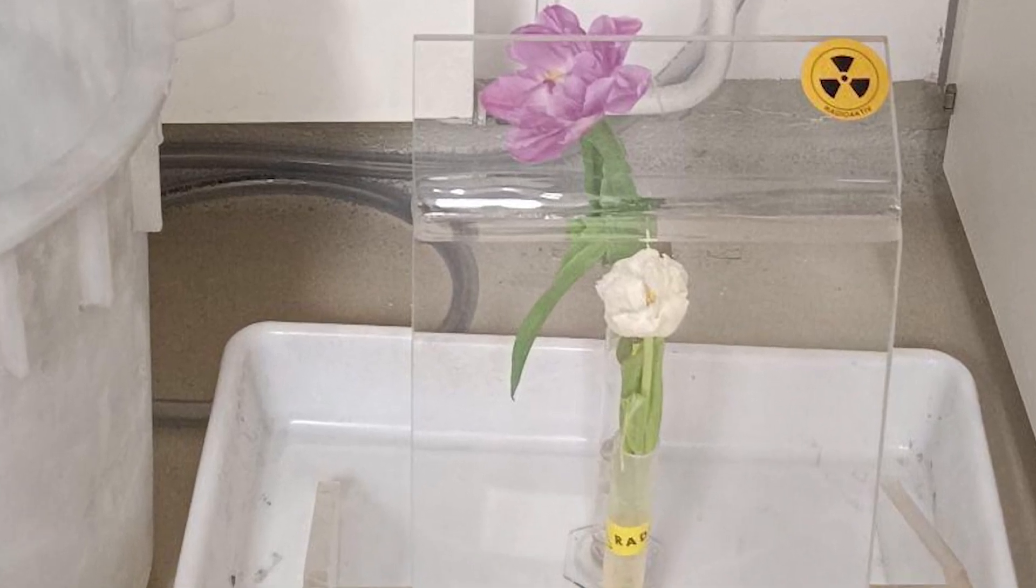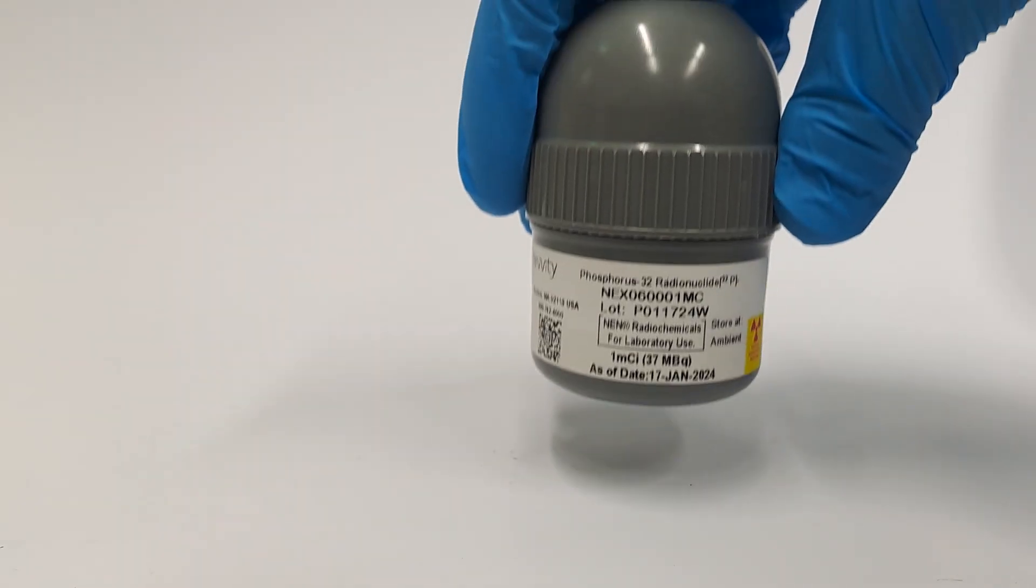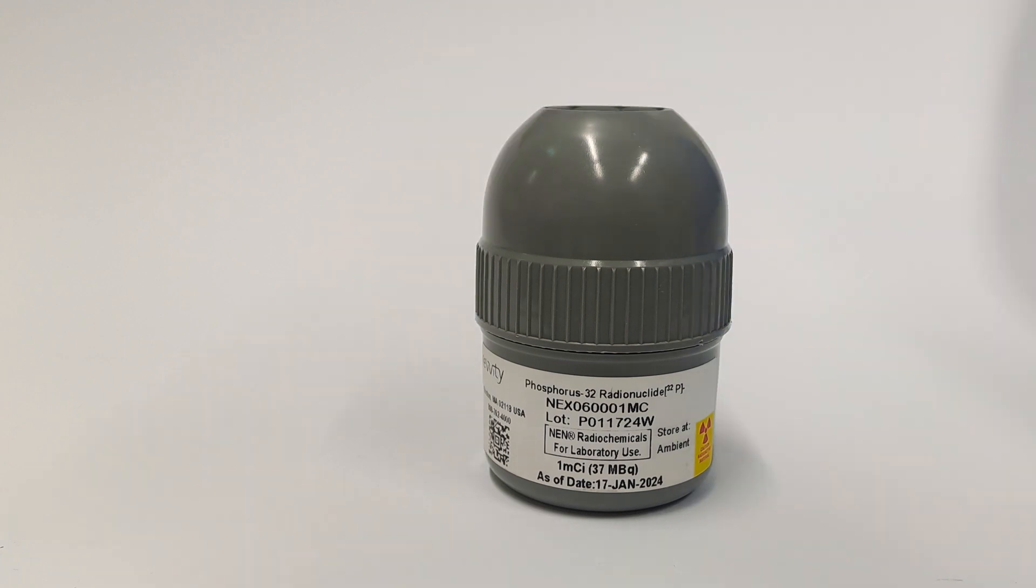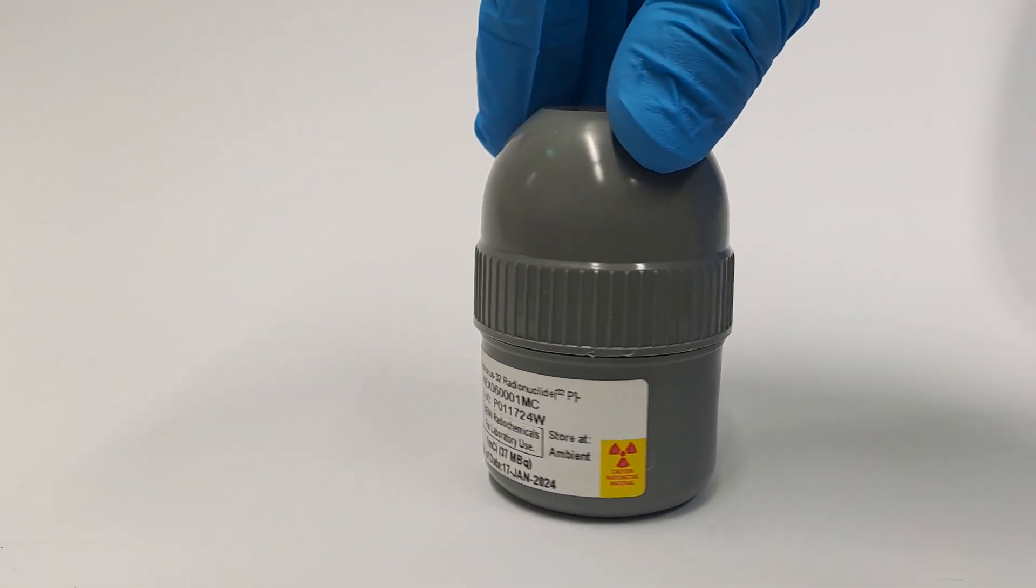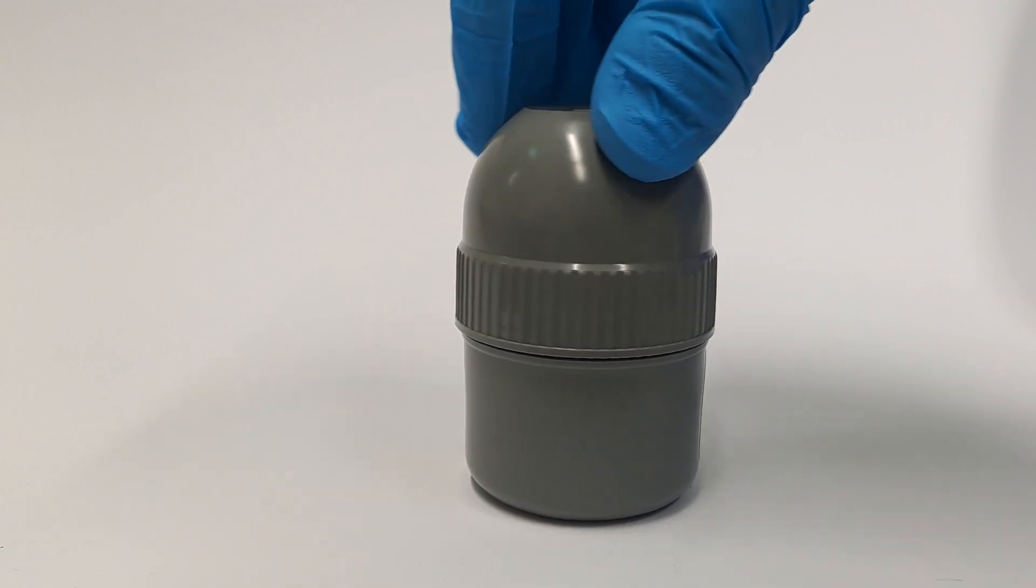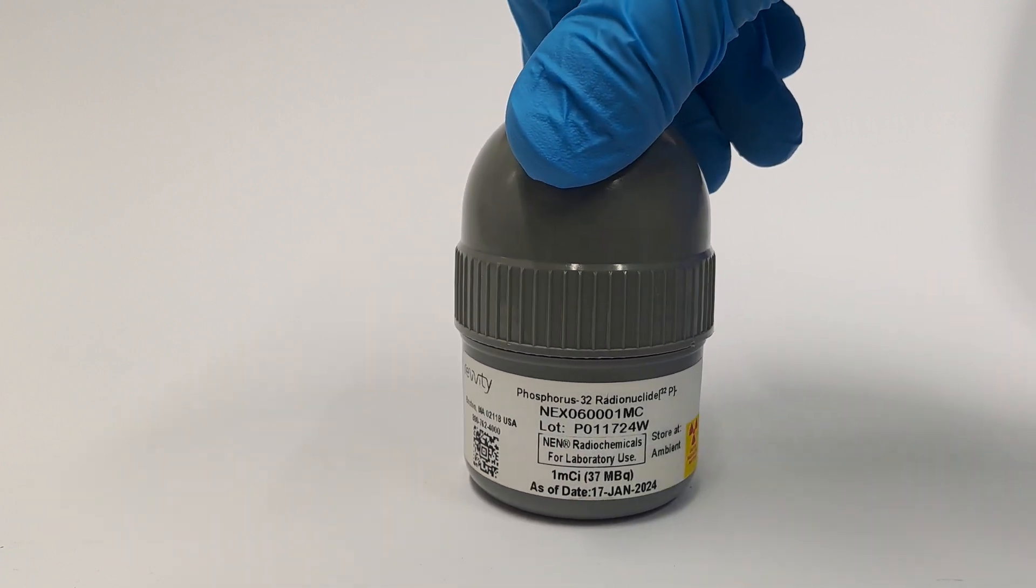Today, a flower is being made radioactive. Why? Because we received a fresh batch of phosphorus-32 in the form of potassium dihydrogen phosphate, and I wanted to investigate whether certain regions of a plant retain more phosphate than others.